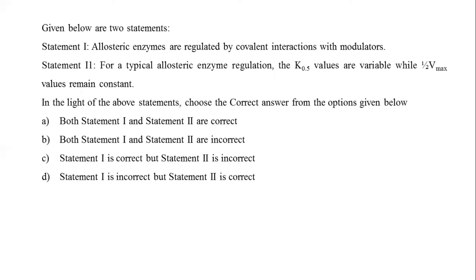The next question gives two statements. Statement 1: allosteric enzymes are regulated by equivalent interactions with modulators. Statement 2: for a typical allosteric enzyme regulation, the K0.5 values are variable while the half-Vmax value remains constant.